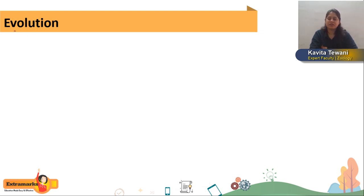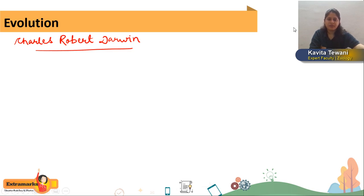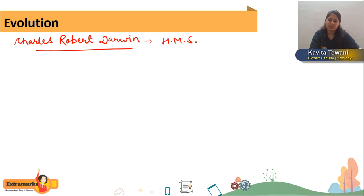Before that, I want to tell you about one name very frequently associated with this chapter — Charles Robert Darwin. Many people don't know his complete name, but they know the name Darwin. He was very young, just 22 years old, when he went on his ship to explore the flora and fauna — that means plants and animals of the sea. His ship's name was HMS Beagle. Please remember this name, as it often appears in questions.